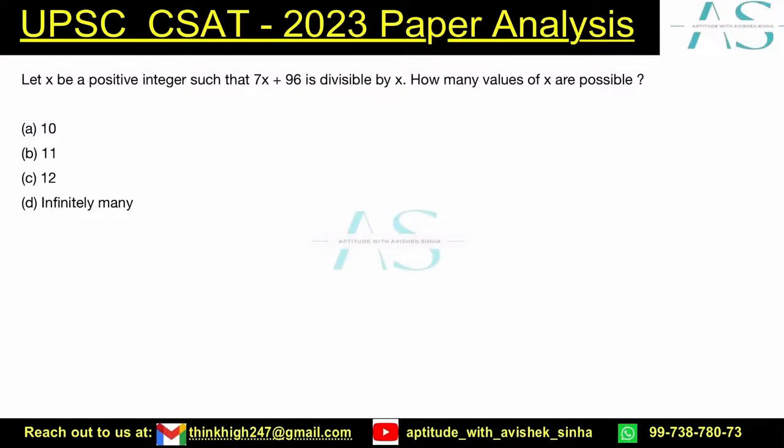Let x be a positive integer such that 7x + 96 is divisible by x. How many values of x are possible? According to the given condition, 7x + 96 is divisible by x - how many possible values of x can exist?